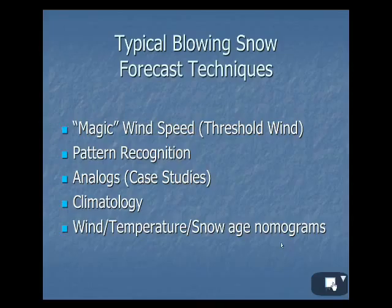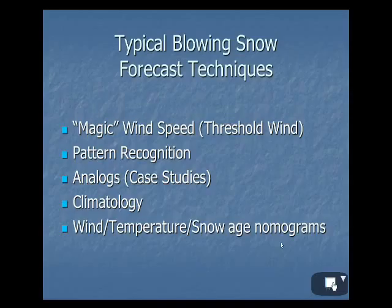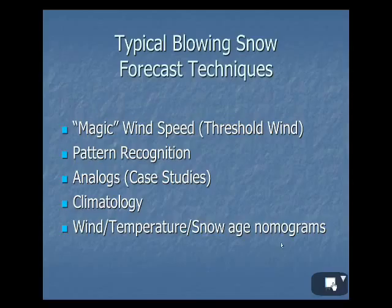Some of these slides are from David Bagley's presentation — those will be in blue color. I did get permission for that. Some typical blowing snow forecast techniques include that magic wind threshold — our blowing snow advisories say 25 miles per hour, blizzard warnings say 35 miles per hour. But we know blizzards can occur at slightly less, and blowing snow can impact travel at less than 25 mph as well. There's also pattern recognition, case studies, climatology, and the wind-temperature-snow age nomograms this research introduces.